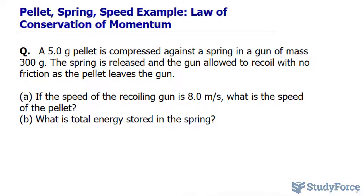We're expected to do two things. If the speed of the recoiling gun is 8.0 meters per second, what is the speed of the pellet? And what is the total energy stored in the spring?